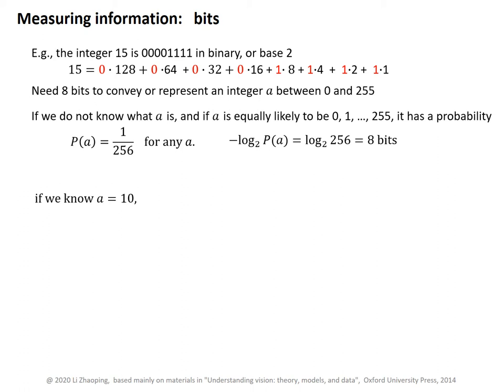If we know that A is equal to 10, then the probability for A equal to 10 is 1, and the probability for A to be any other integer value is 0. The negative log base 2 of the probability for A equal to 10 is 0.